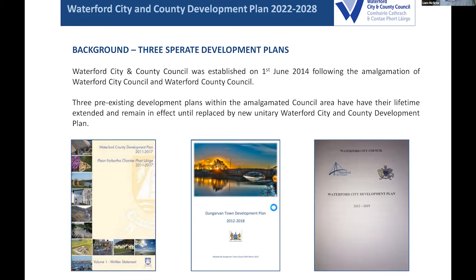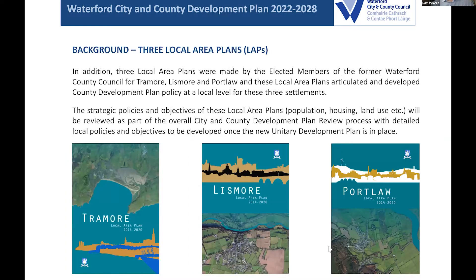Below those three plans, we had local area plans — we still have and operate these, including ones for Tramore, Lismore, and Portlaw. Our intention is to revise all of those once we have our new city and county development plan in place, and we'll also do local area plans for a number of other areas. One area in particular that we're interested in doing a plan for is the Guelthoct area — it has its own particular issues that need to be addressed in its own plan, as opposed to just being a chapter within the overall city and county plan.